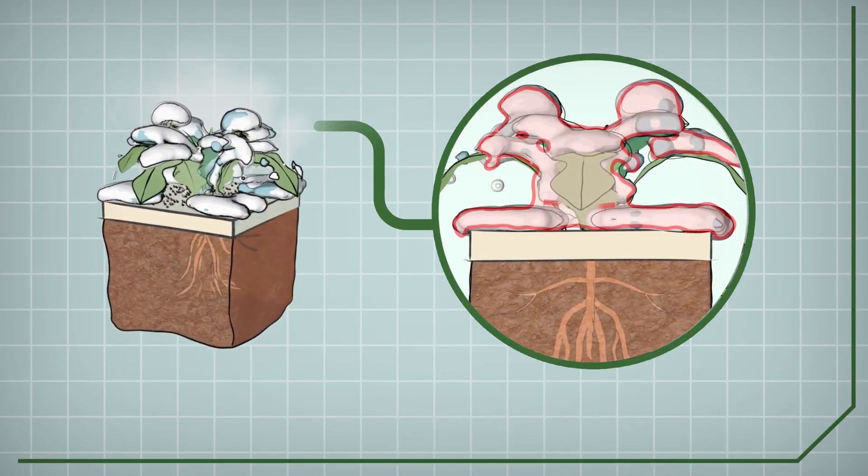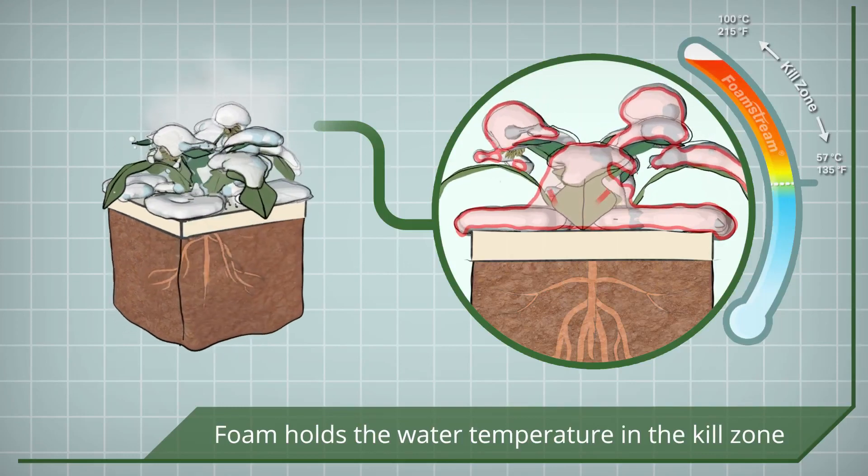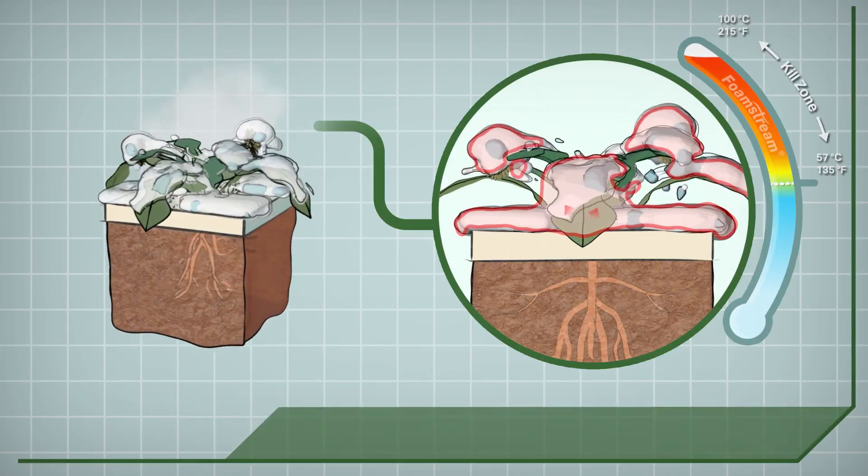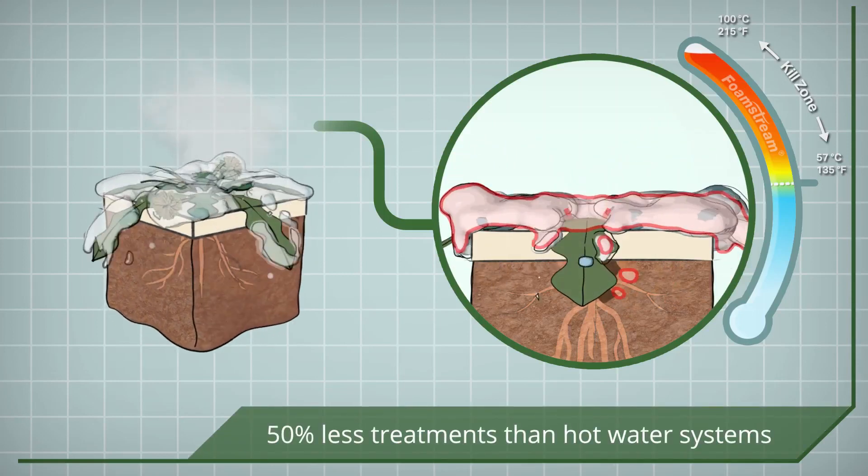The Foamstream blanket ensures the temperature in the hot water is retained above the 57 degree kill zone for an extended period of time. Without it, the heat is simply lost to the atmosphere.